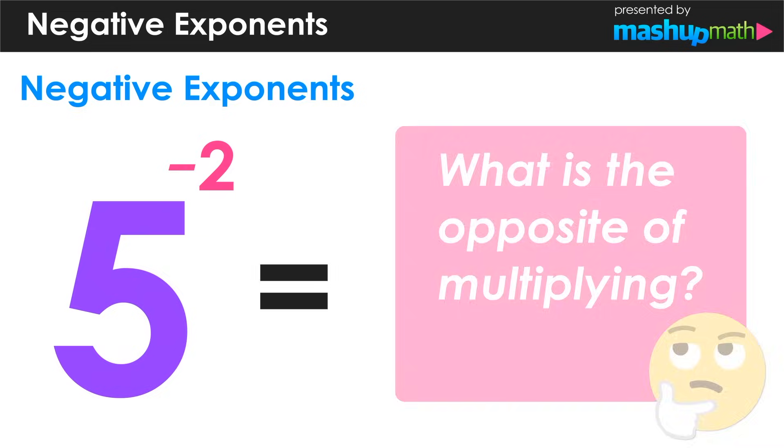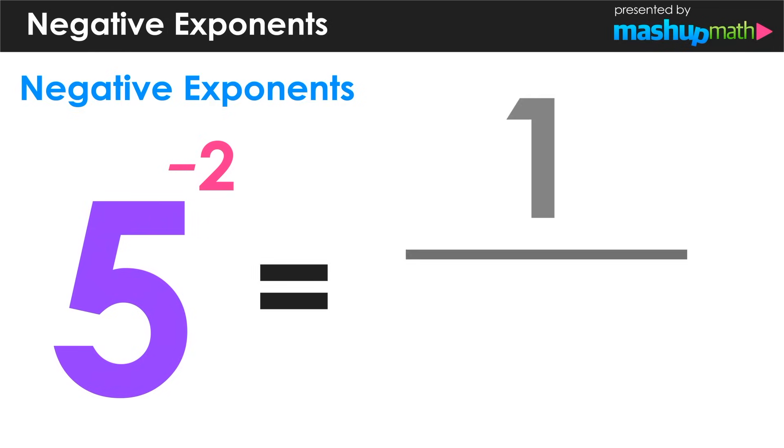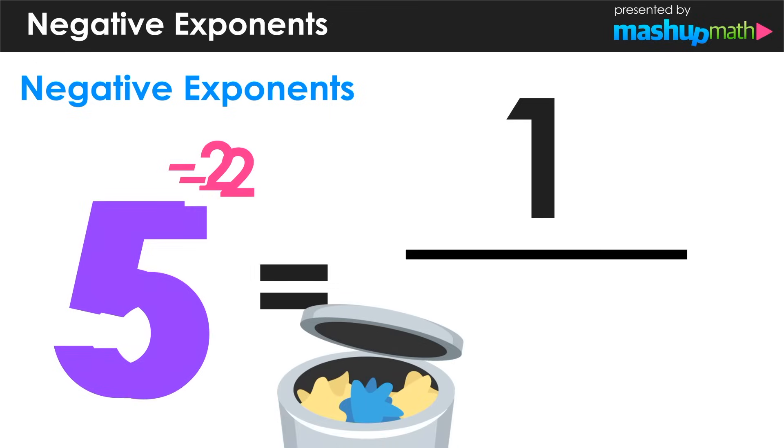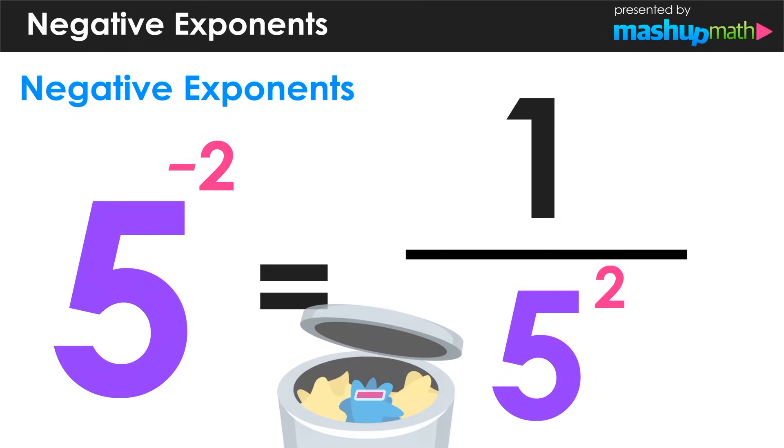You are correct if you said dividing. So in this case, we are going to express as a fraction that 5 to the negative second power is equal to 1 over 5 to the second power. Notice how we threw away the negative sign in the exponent.